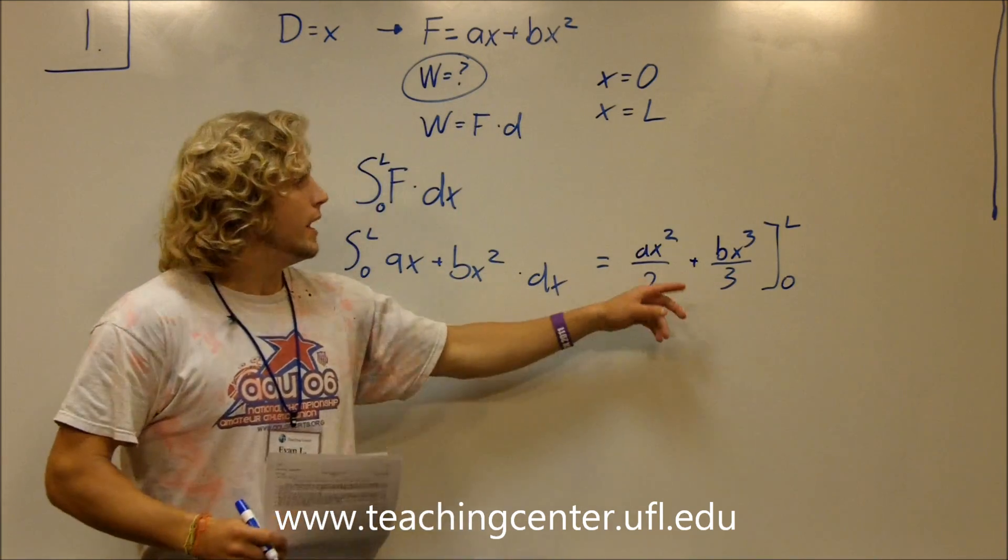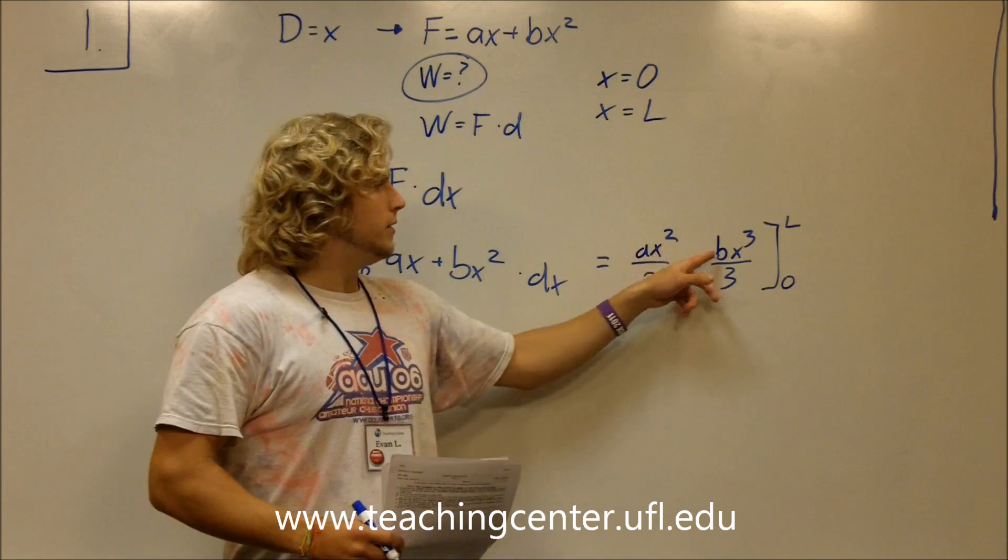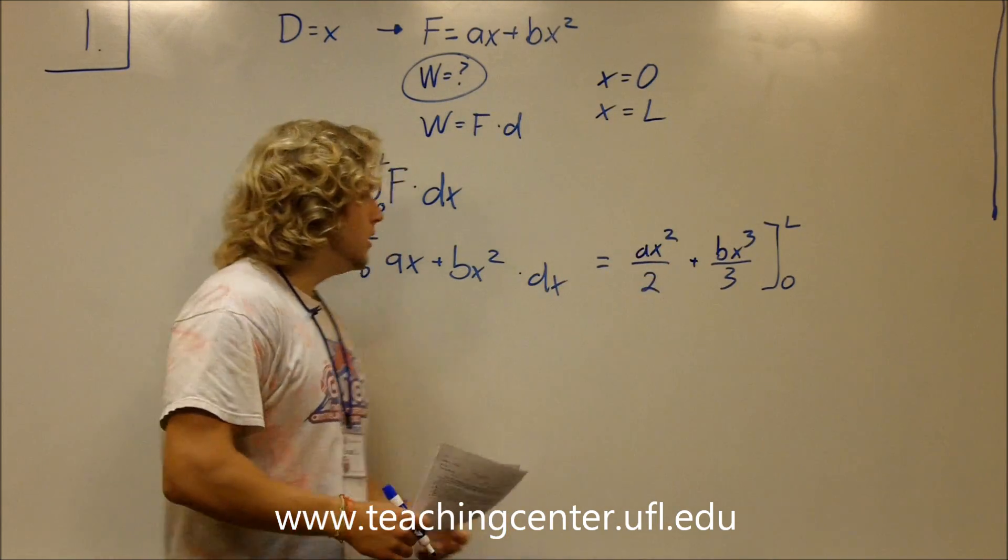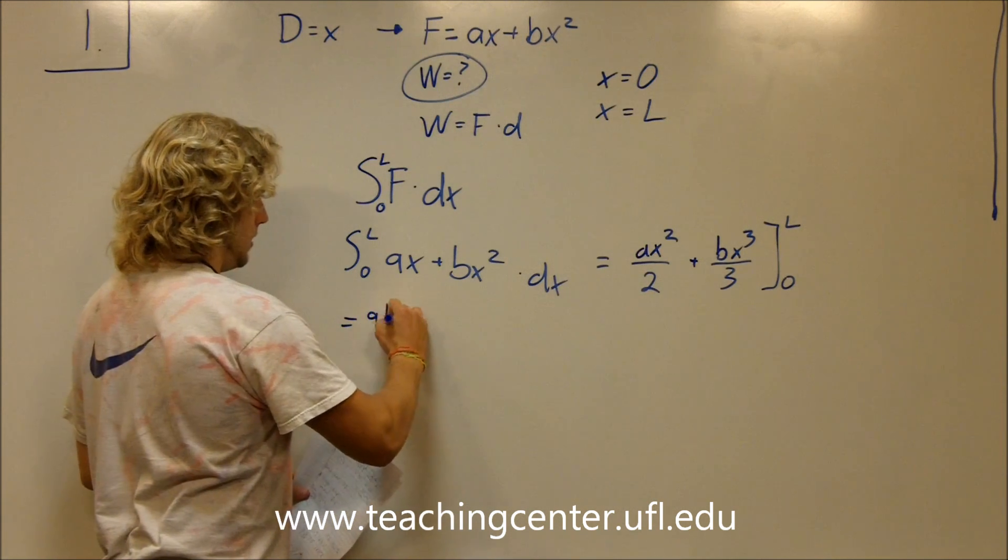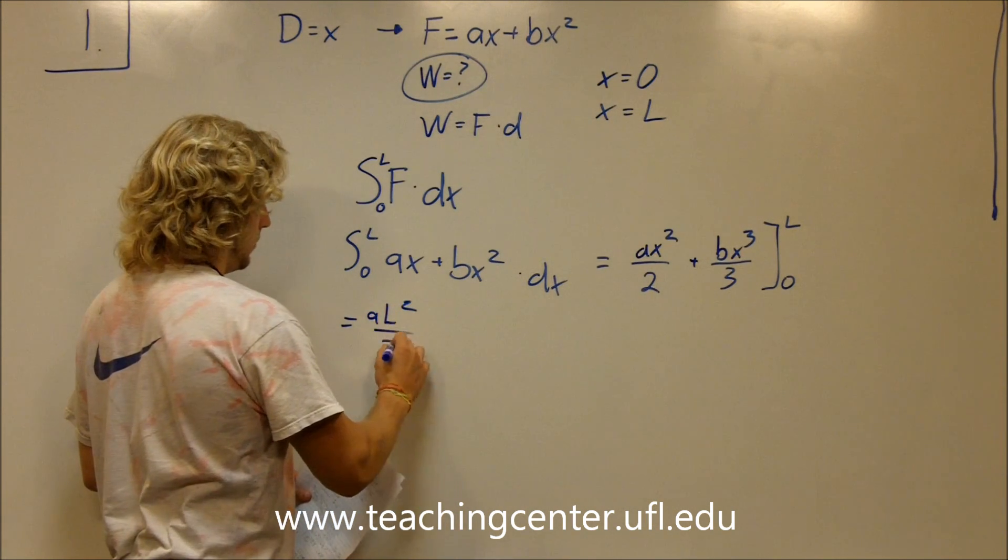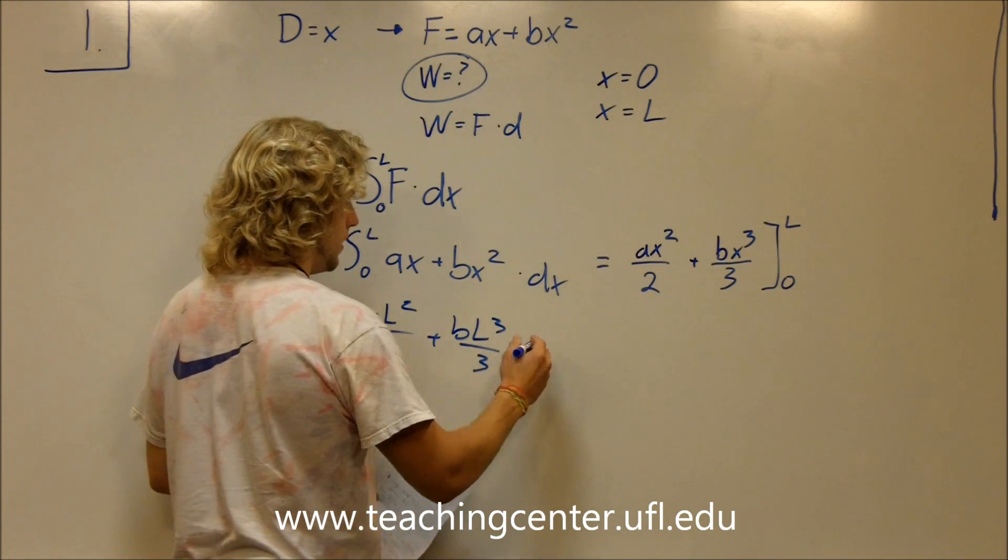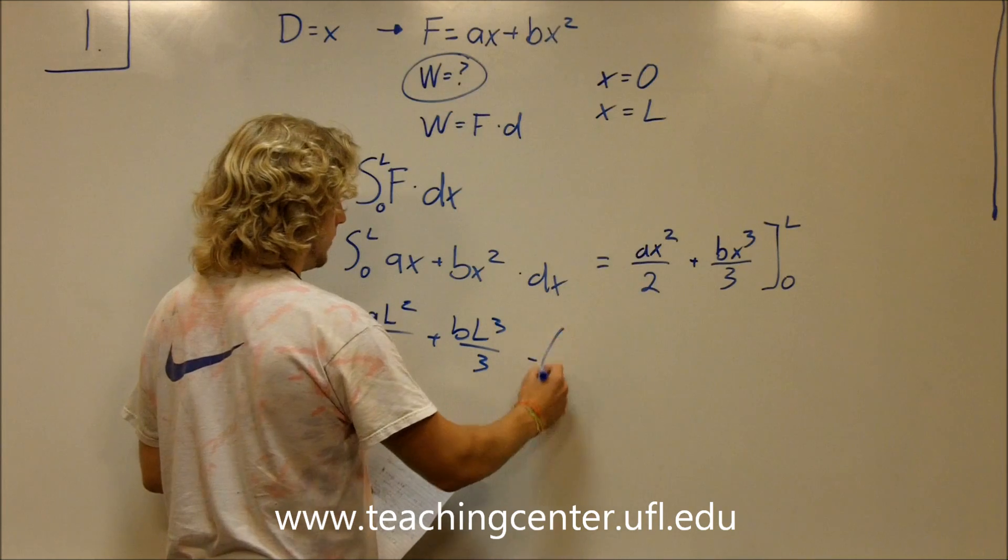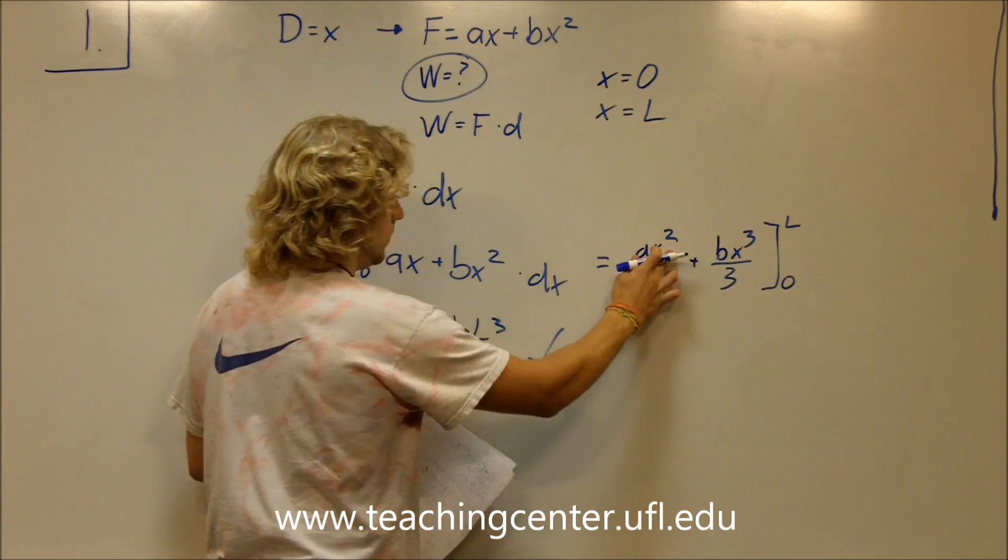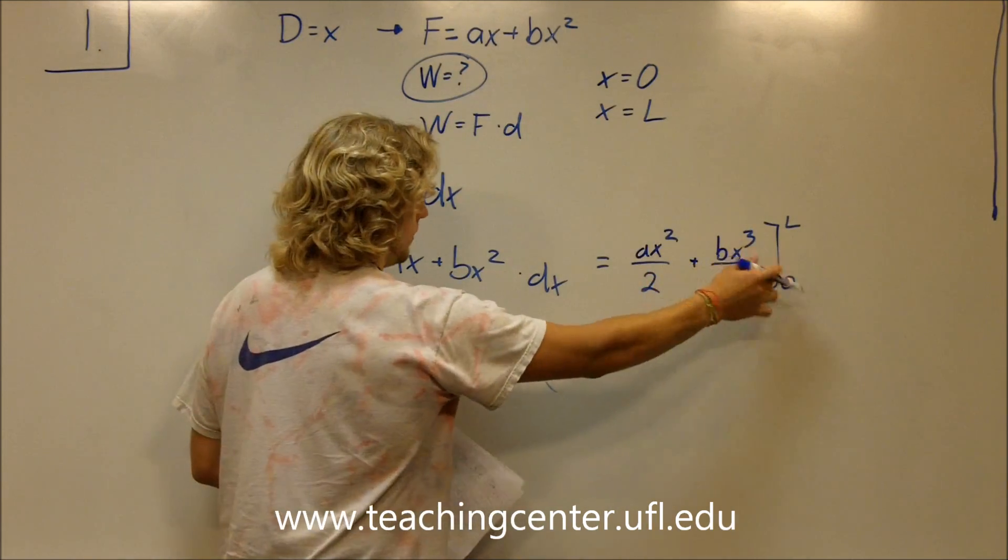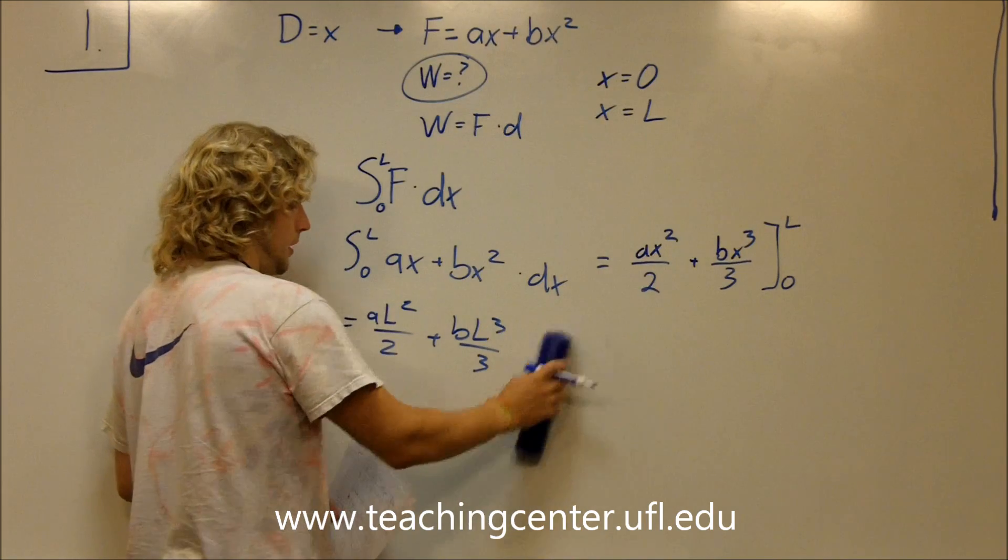So this ends up being, now we can plug in L and zero into the x's because we're taking this integral in terms of x. So this means that it equals aL squared over 2 plus bL to the 3 over 3. And then we subtract a times zero, that's going to go away. B times zero, that's also going to go away. So we don't need to worry about that.